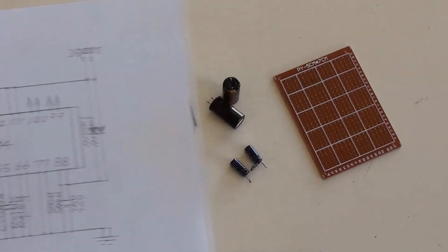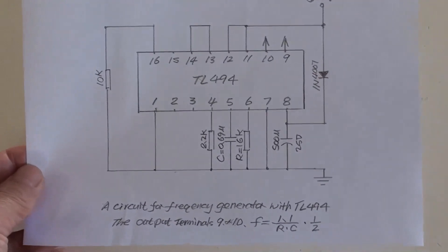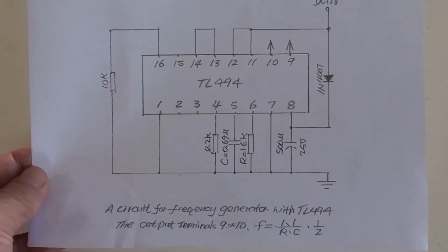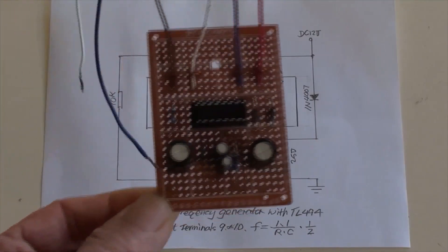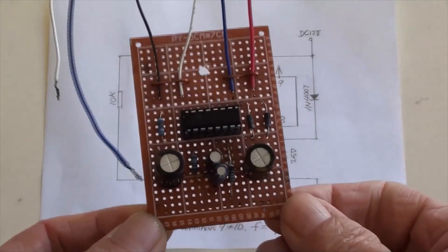This is the circuits diagram of TL494 frequency oscillator. The parts values are clearly marked. Here we go. A simple frequency oscillator has been made.